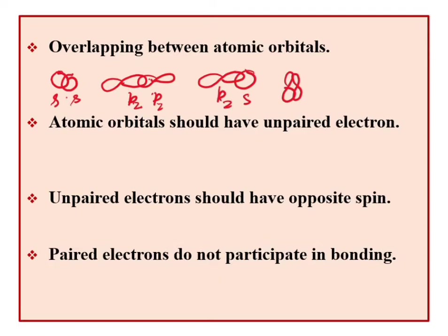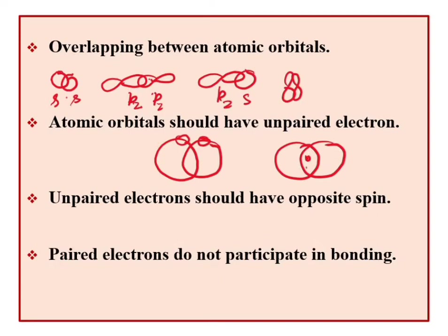The next condition is: what atomic orbitals should have unpaired electrons. So, which atomic orbitals overlap must have unpaired electrons. The atomic orbital participating in overlap must contain unpaired electrons for bonding to occur.